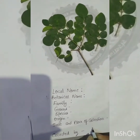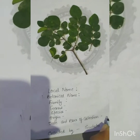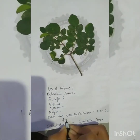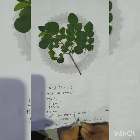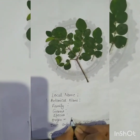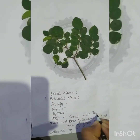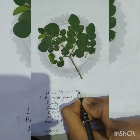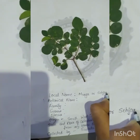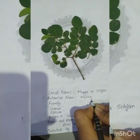Do not forget to mention the name of the person who collected it. Since I have started from the last entry, you can start from the beginning. The local name for drumstick is munga, or it is also known as sejan.